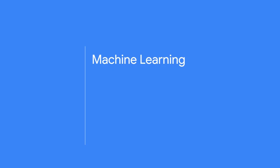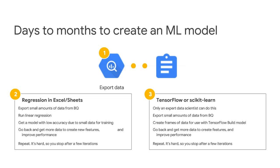Let's look at what happens today when we want to perform machine learning on a data warehouse. A machine learning task often involves getting data out of the data warehouse — let's say we have some data in Google BigQuery. In one scenario, an analyst wanting to build regression models in Excel or Sheets would export a small fraction of data from BigQuery into Sheets and run linear regression. The accuracy might be low because it's just a small fraction of data, so they have to go back and fetch more data to improve accuracy. There are iterations over and over again, and every time the data needs to be extracted — a lot of complexity and overhead.